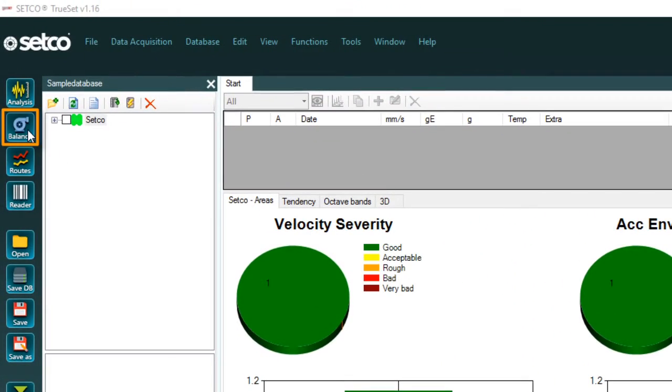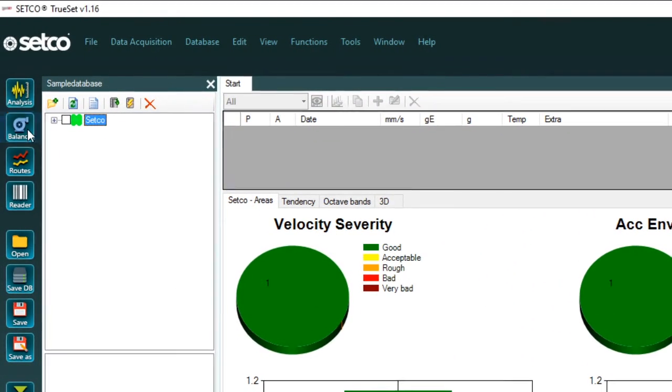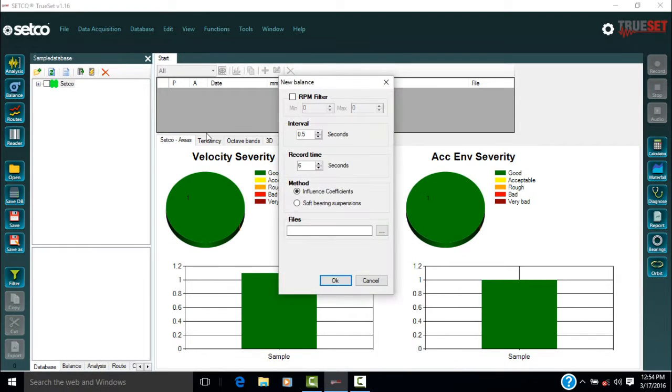To start, click on the balance button on the left side. Now select the RPM filter checkbox. Enter in minimum and maximum values that are 200 to 400 RPM above and below the intended running speed. It is important to record every run at the same RPM. The more consistent the speed, the more accurate the results will be. Now click OK.